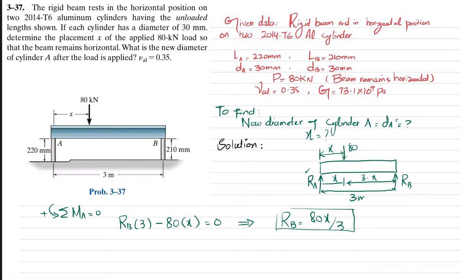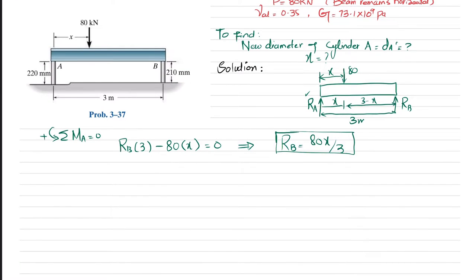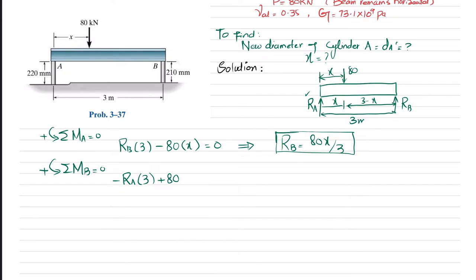Now we find Ra by taking the sum of moments about point B equal to zero, with counterclockwise as positive. The moment due to Ra with perpendicular distance 3 is clockwise (negative), and the moment due to 80 kN with perpendicular distance (3 − x) is counterclockwise. So: −Ra × 3 + 80 × (3 − x) = 0, giving Ra = 80(3 − x)/3.